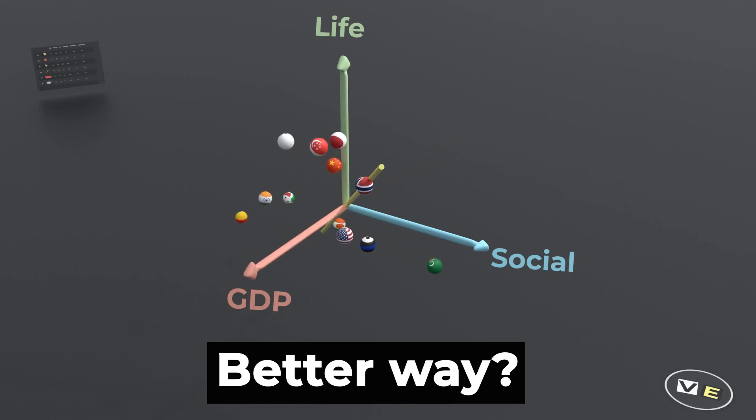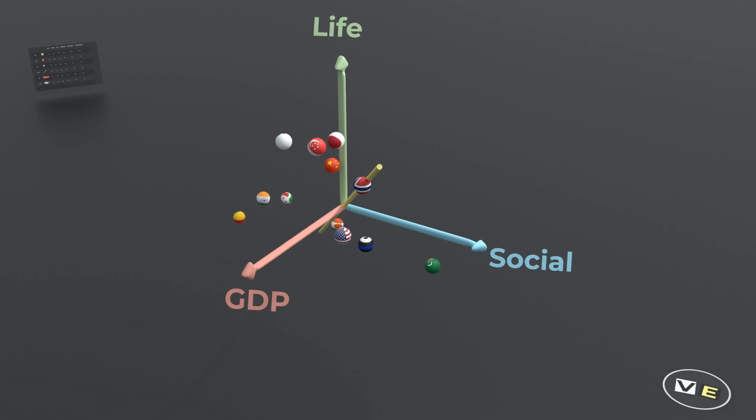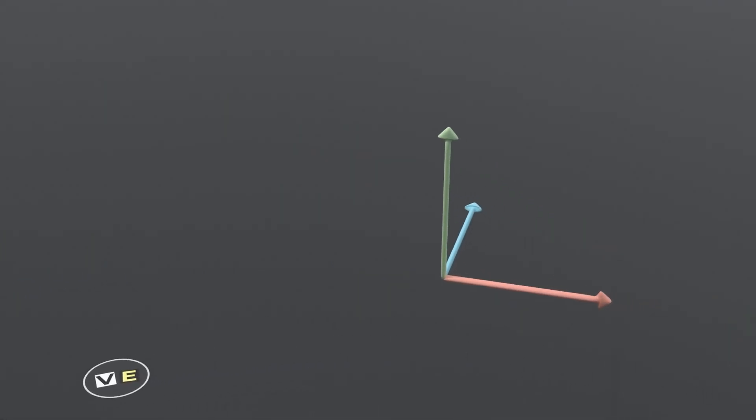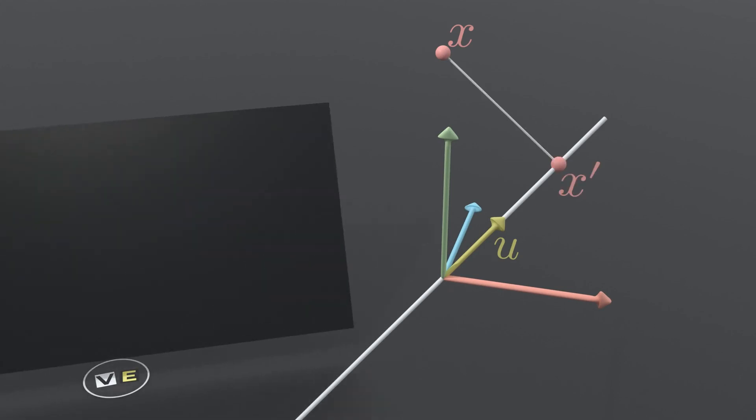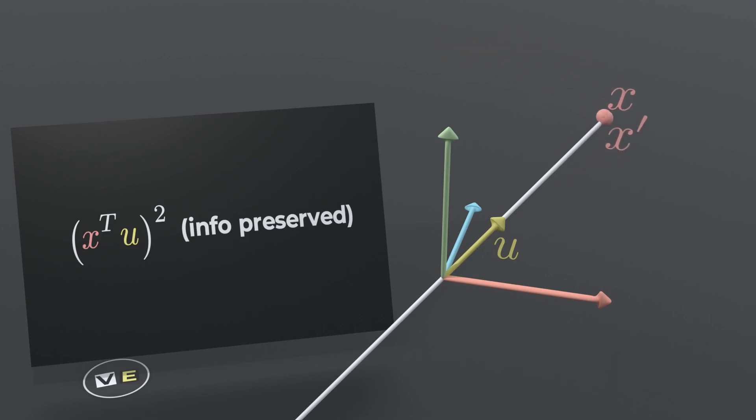To answer that question, let's take a small detour to explain how projection works. When you project a point x on a unit vector u, you get a new point x' whose magnitude is given by the inner product between x and u. And we can think of the square of this inner product as the amount of information about x that is preserved after projection on u. In particular, this quantity is maximal when x is parallel to u, and is minimal when x is orthogonal to u.